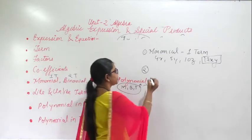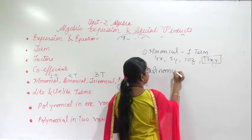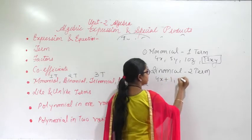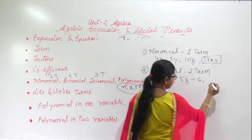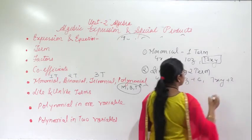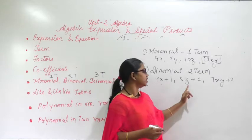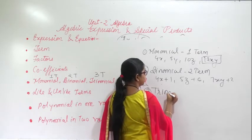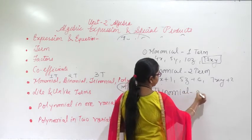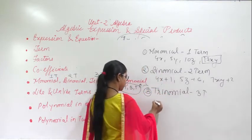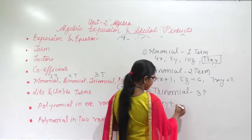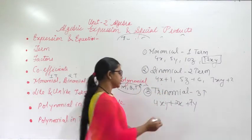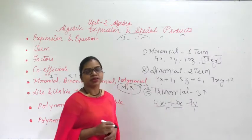In binomial there will be 2 terms. For example: 4x plus 1, 5z plus 6, and 7xy plus 2 — each has 2 terms, so these come under binomial. Trinomial means 3 terms. For example: 4x plus 4xy plus 2x — there are 3 terms, so this comes under trinomial.